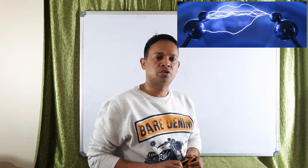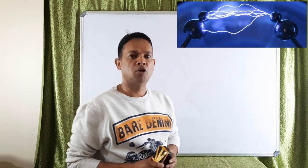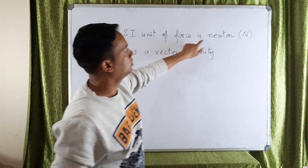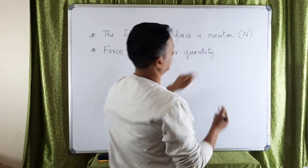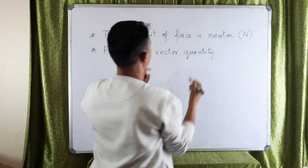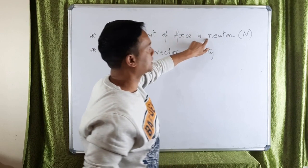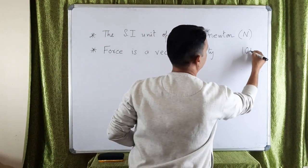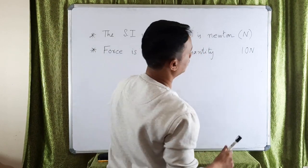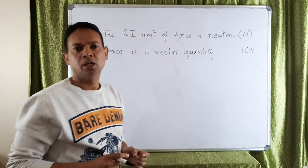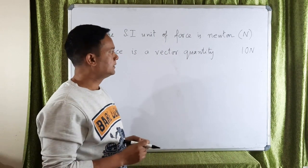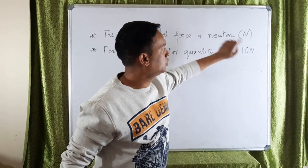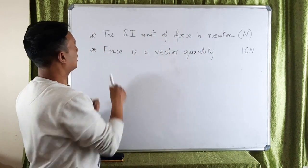Electric force is also an example of non-contact force. Two important points to remember: the unit of force is newton, symbol capital N — though here I'm writing small 'n' since I'm using it as a unit, not as the name of a person. We can have a 10 newton force or 20 newton force. The SI unit is newton, though other units like kilogram-weight and dyne also exist.